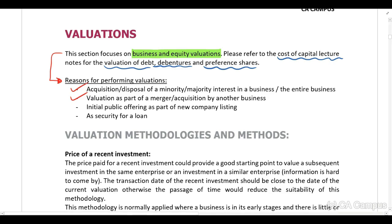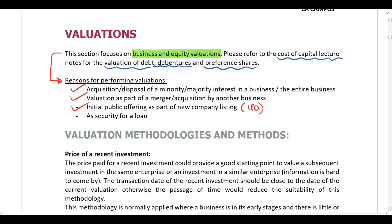Then a company might be listing for the first time. If they are listing for the first time, they need to know the initial public offering price — what price will they sell their shares at. So obviously they need to perform a business valuation to determine the initial share price. Lastly, if a company requires a loan, they might have to give the business as security, and we need to know what the business is worth because that will determine the value of the loan the bank will be prepared to give.